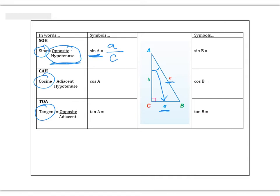Cosine is adjacent over hypotenuse. The adjacent side is a side that touches the angle. Finding the cosine of A, the adjacent side to angle A is side B. Technically the hypotenuse C also touches angle A, but since C is already the hypotenuse, we call the other touching side the adjacent side. So cosine of A is B over C. Tangent is opposite over adjacent, so the tangent of A is side a over side B.